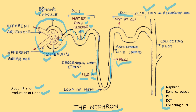The collecting duct receives urine from multiple nephrons and carries it towards the renal pelvis. The permeability of the collecting duct to water is regulated by antidiuretic hormone, ADH, which controls water reabsorption, thus influencing urine concentration.